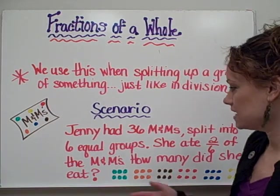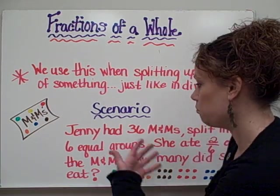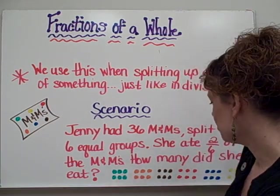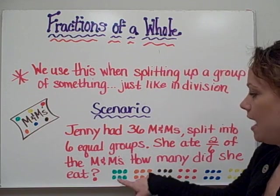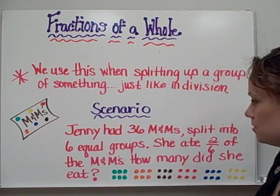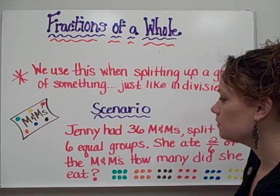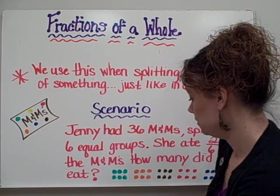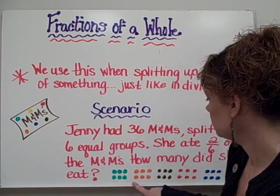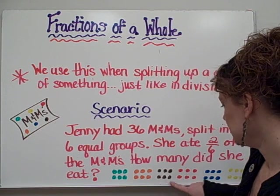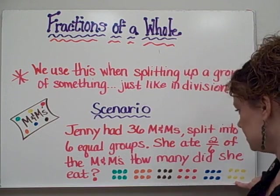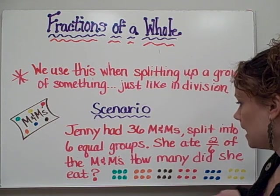So what I've done here is I've created a picture representation of what Jenny did. She had her 36 M&Ms. And if you count up all of these M&Ms, there will be 36. And she split them equally into six different groups. Which means a group of six green, six orange, six brown, six red, six blue, and six yellow.